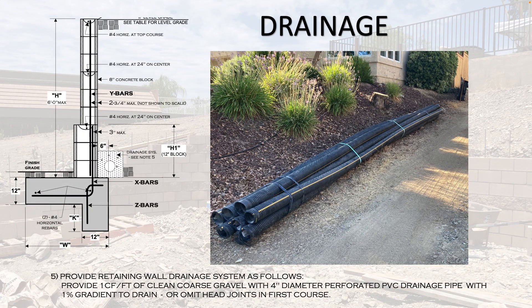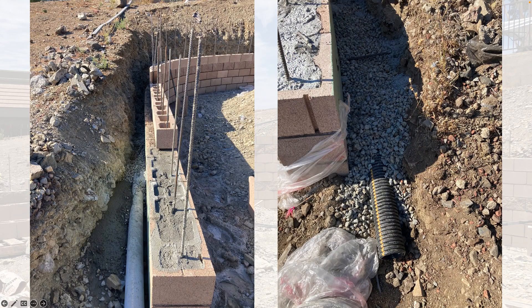A critical component of the retaining wall is drainage. The wall holds up a lot of earth, and water can percolate behind it and get trapped. Over time that pooled water can damage the CMU block wall. To address this, we installed a four-inch perforated PVC drainage pipe — it has small slits along it that allow water to enter the pipe and escape out the sides. Photos here show the drainage pipe being installed with gravel placed around it per the standard detail.